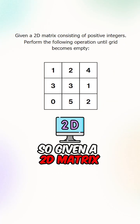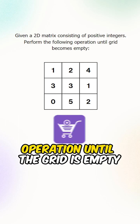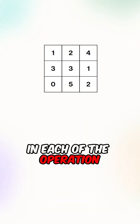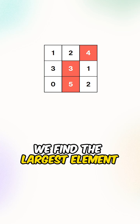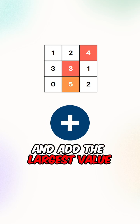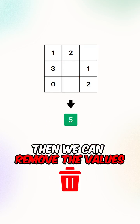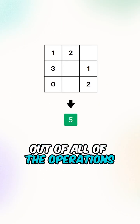Given a 2D matrix that contains positive numbers, perform the following operation until the grid is empty. In each of the operations, we find the largest elements in each of the rows and add the largest value to our results, then we can remove the values. Our task is to find the total sum out of all the operations.